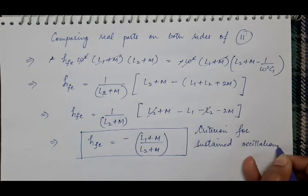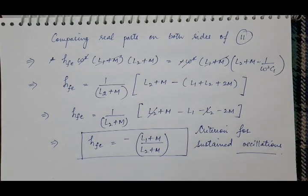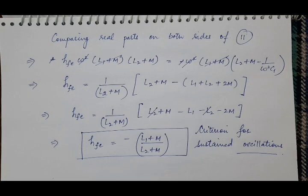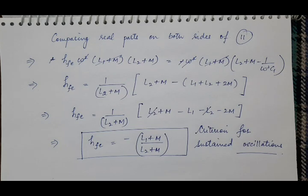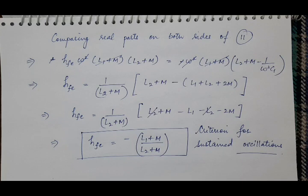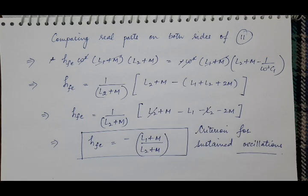In the next lecture we will discuss the Colpitts oscillator. The difference from the Hartley oscillator is in the tank circuit: where Hartley uses a series combination of two inductors L1 and L2 in parallel with capacitor C1, the Colpitts oscillator uses a series combination of two capacitors C1 and C2 in place of the inductors, connected in parallel with a single inductor L1.